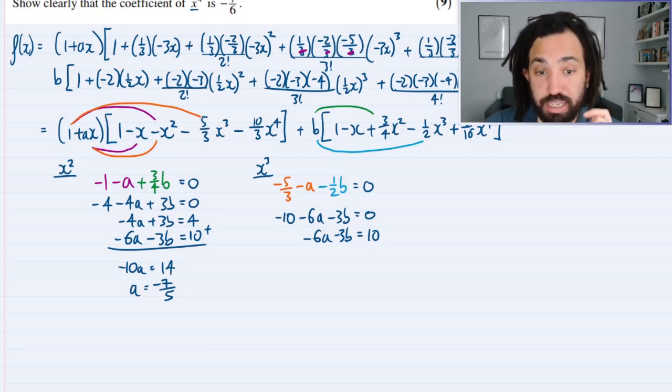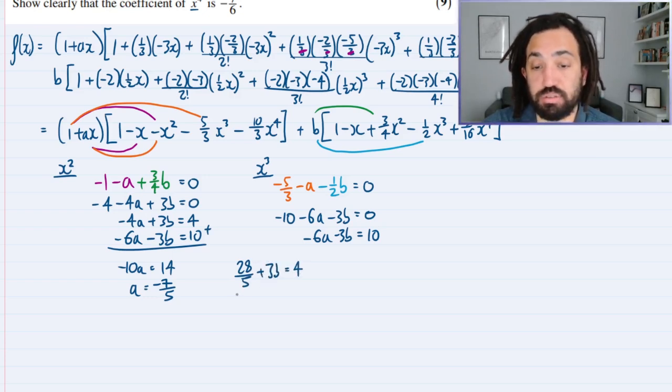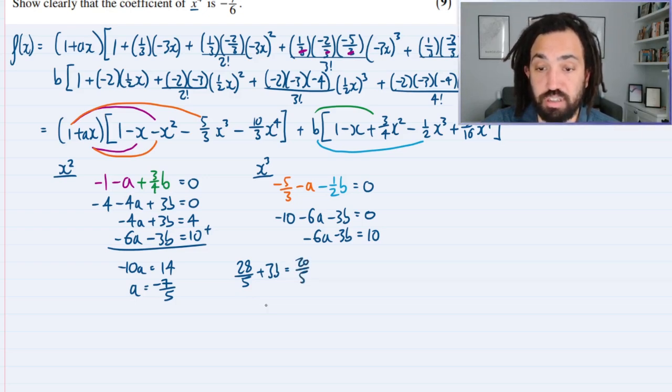Lovely okay I'm going to just grab some more space. So I'll write them one above and below each other like so and then let's add these equations. Okay with that gives me minus 10a is equal to 14. So a is equal to minus 7 over 5. Yes that is right. Then let's sub that back in so that gives me 28 over 5 and plus 3b is equal to 4 which is the same as 20 over 5. So 3b is equal to minus 8 over 5. So b is equal to minus 8 over 15.